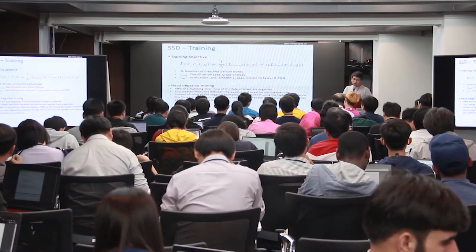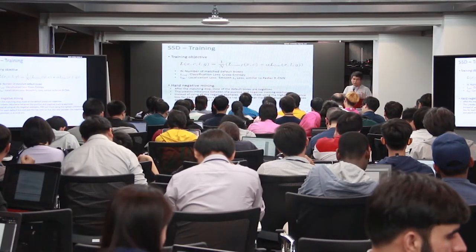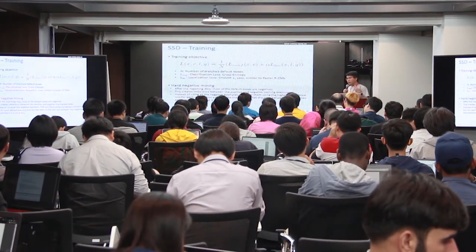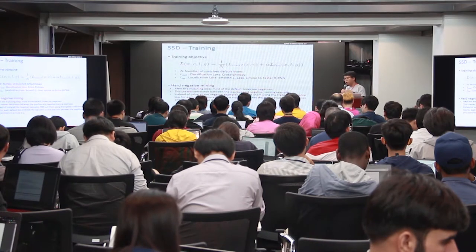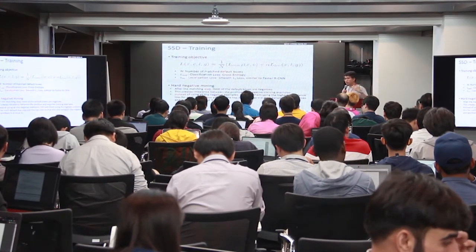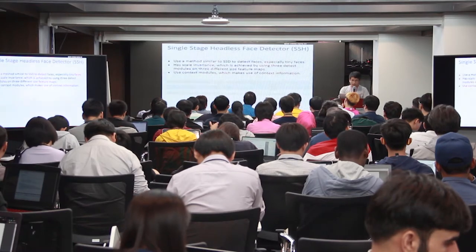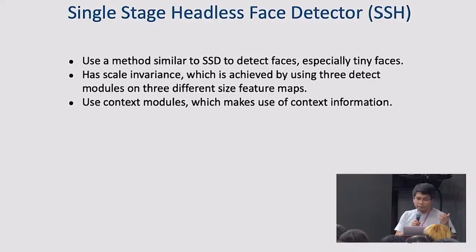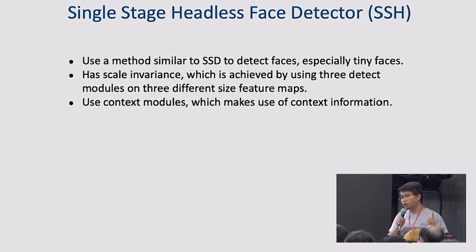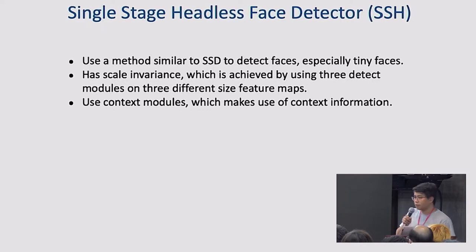An important concept not yet discussed is hard negative mining. In object detection, the number of negative examples far outnumbers positive examples. If this imbalance isn't addressed, training focuses too much on negatives and doesn't learn the positive concept well. The solution is to use the negatives that most confuse the detector with positives — called hard negatives. Of all negative examples, choose the ones most easily confused with positive examples, helping the model focus on difficult cases rather than wasting effort on easy examples.